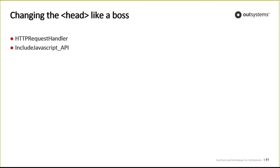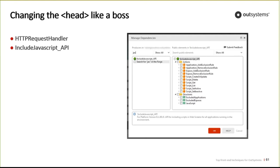Another hidden gem of the platform is the Include JavaScript API extension. Similar to HTTP Request Handler, the key difference is that it enables you to add a script that is added to every page across a specific group of applications or modules. Simply add exclusion rules for the modules you don't want the script applied to, and that script will be added platform-wide to every page in every application.